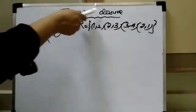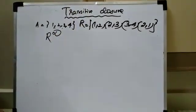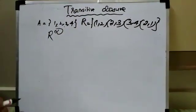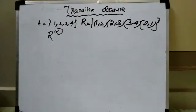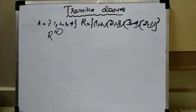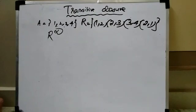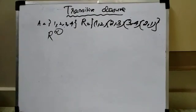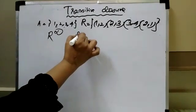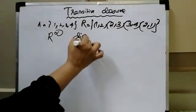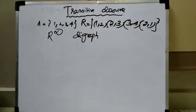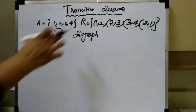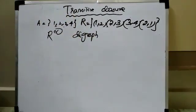Now we will see what is a transitive closure. It is denoted by the symbol R infinity. Before we get into the topic of transitive closure, we should know what is a digraph. A digraph is nothing but a directed graph. You have to construct the directed graph for the given relation.